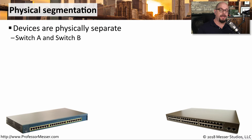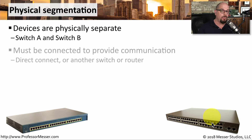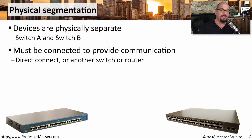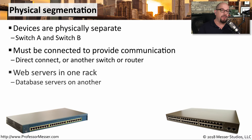With physical segmentation, we have completely separate devices — for example, Switch A and Switch B. These are physically separate devices and they are not connected to each other. The only way these two devices would be able to communicate is if you did connect them together, either directly, through another switch, or through a router. You might use physical segmentation to completely separate devices — for example, all your web servers in one rack and all your database servers in another, both communicating on their own switches.